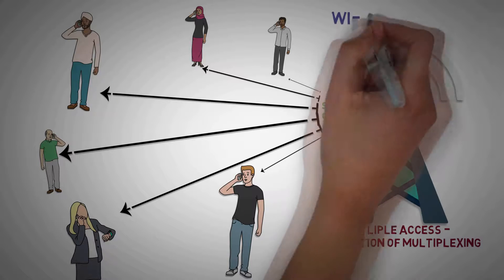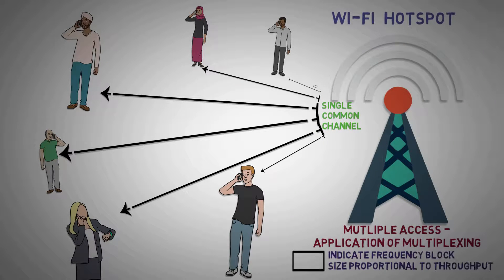So here's a WiFi hotspot sharing its internet connection among multiple users by providing them a frequency block over which they can transmit and receive data. The greater the size of this block, greater is the throughput.